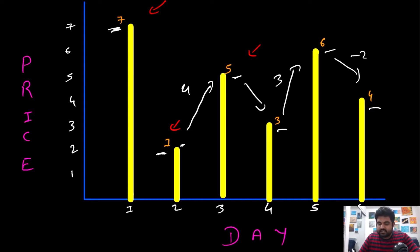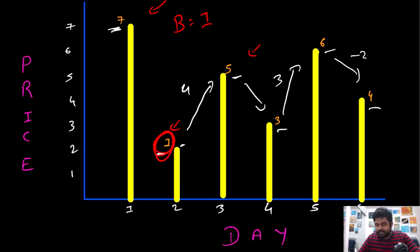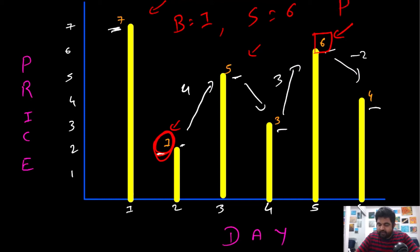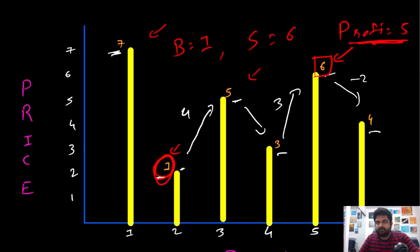If we buy the stock when the price is at 1 and sell when the price is at 6, we can actually make a profit of $5. This is the answer we need to return — the maximum profit we can make based on these stock prices.